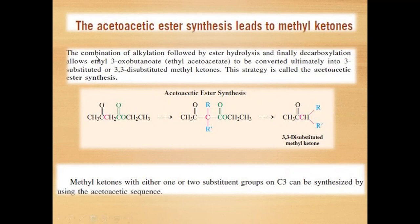The synthesis occurs in three steps. First, the ester will be alkylated — it can be monoalkylated or dialkylated. This alkylated ester will further be hydrolyzed, and finally in the third step, the carboxylic acid will be decarboxylated to form a substituted methyl ketone. This overall process is called acetoacetic synthesis.